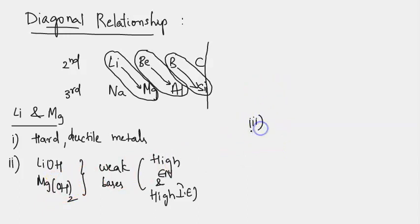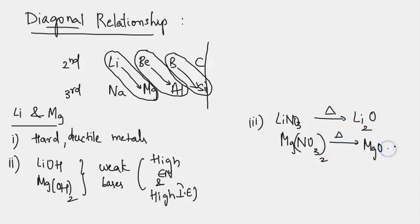The next similarity: both the nitrates, lithium nitrate and magnesium nitrate, upon heating decompose into lithium oxide and magnesium oxide plus NO2 plus O2. This is deviating from their own members of the family.